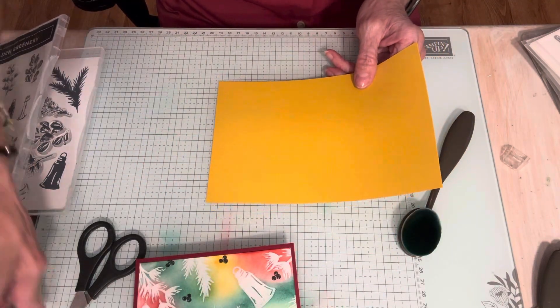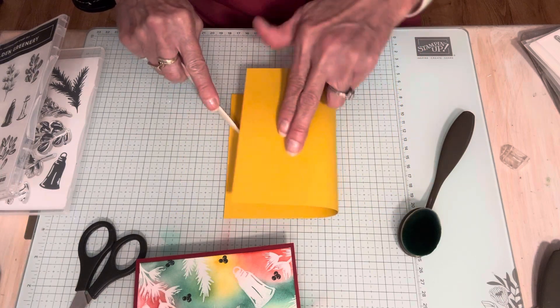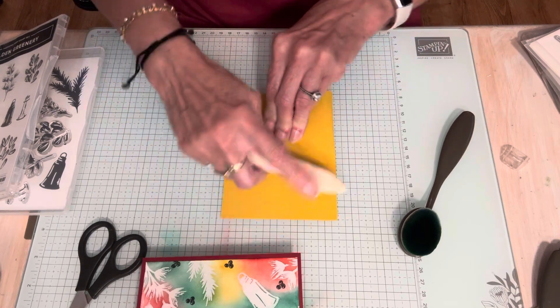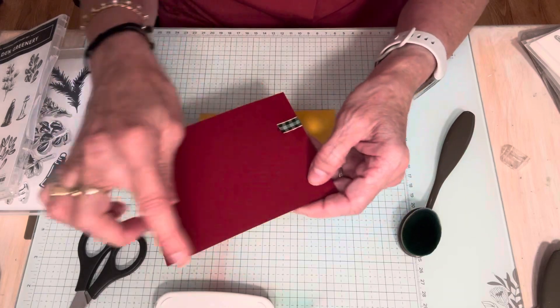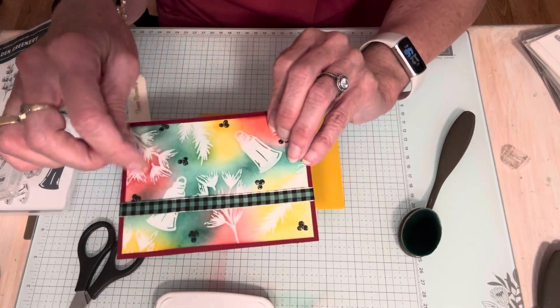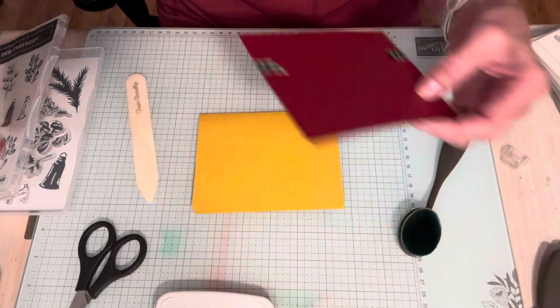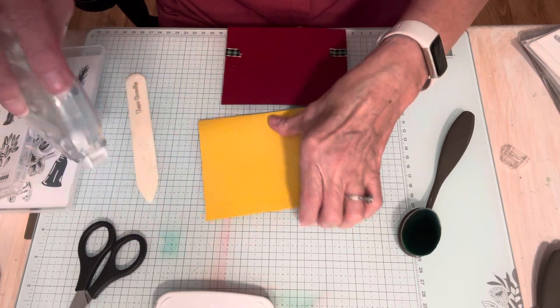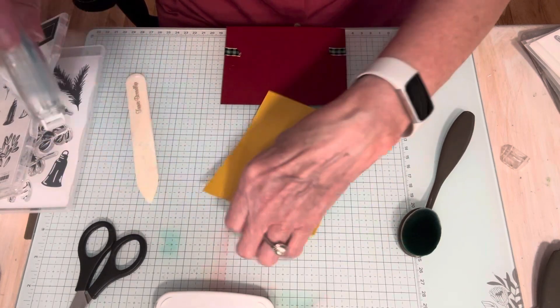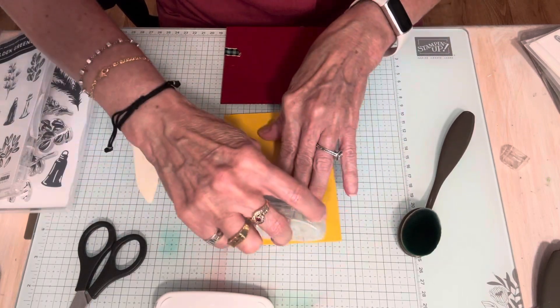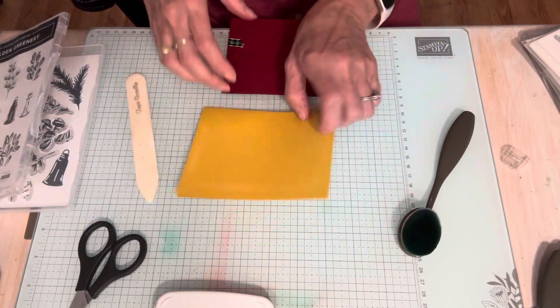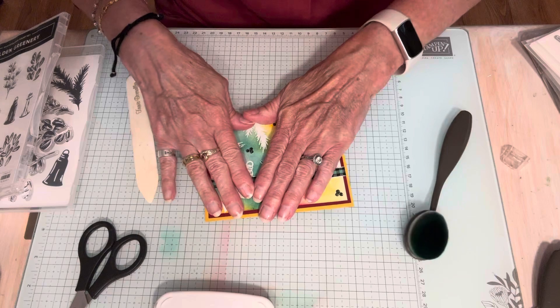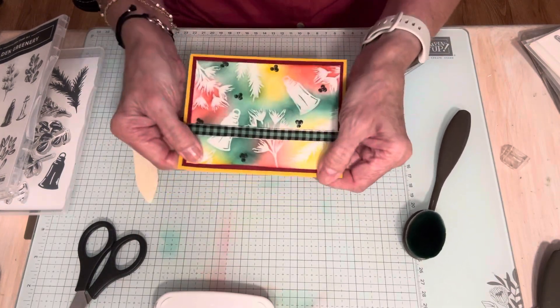Now I have it for my card base and this is five and a half by eight and a half. I'm using a piece of crushed curry and this is going to be my card base. So size wise, if you're wondering, this cherry cobbler is four by five and a quarter and the white was three and three fourths by five. So I'm going to put pretty much adhesive on here because I want this to stay put. Usually I don't use that much adhesive, but on this card I am. And I have another card to show you. It's not a Christmas card, but I have another card to show you that I made.